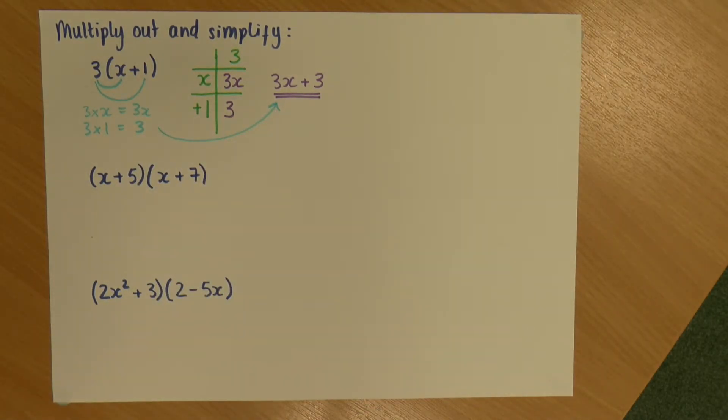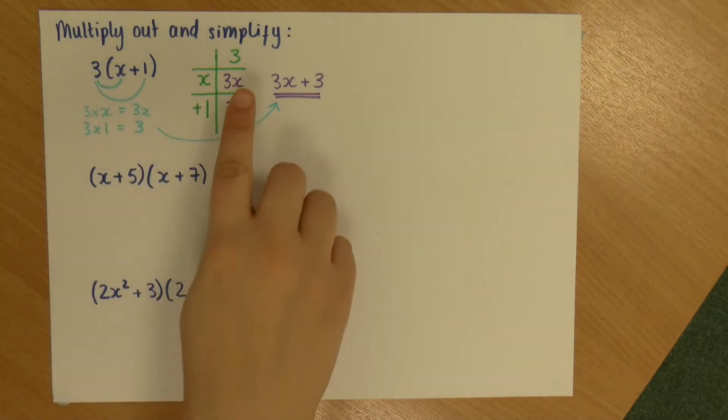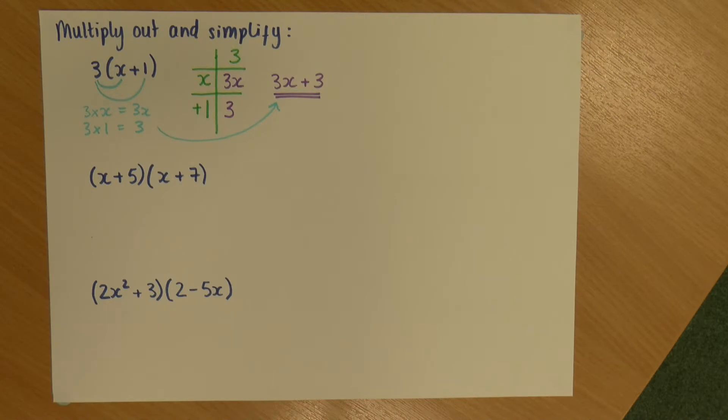Which is 3x. And this second line is telling me to do 3 times 1, which is 3. And again, that just leads me to the same answer. So, there's nothing particularly special about either of these. You can use whichever one you prefer. I personally use this. But I think that the box method is better for beginners.